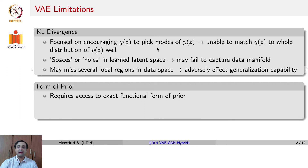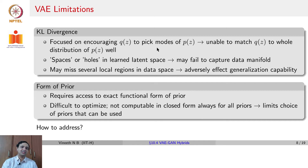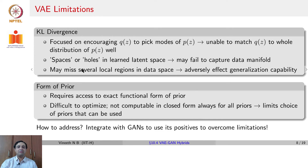Lastly, the prior assumed in VAEs can become a limitation. VAEs require you to assume a certain functional form of a prior, such as a unit Gaussian. For different kinds of priors, VAEs may be difficult to optimize — you may not get a closed form solution. In our case, because we assumed the approximate posterior and prior to both be Gaussian, the KL divergence had a closed form expression that was differentiable, allowing VAE training. That may not be true for other priors, limiting the choices of priors that can be used.